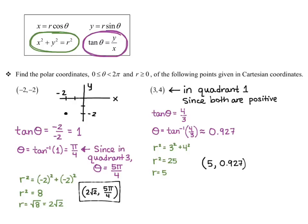In summary: to go from polar to Cartesian, use x = r cos θ and y = r sin θ. To go from Cartesian to polar, use tan θ = y/x and x² + y² = r². That concludes changing points from polar to Cartesian and Cartesian to polar. For changing equations from one system to the other, please watch video two. Thank you.